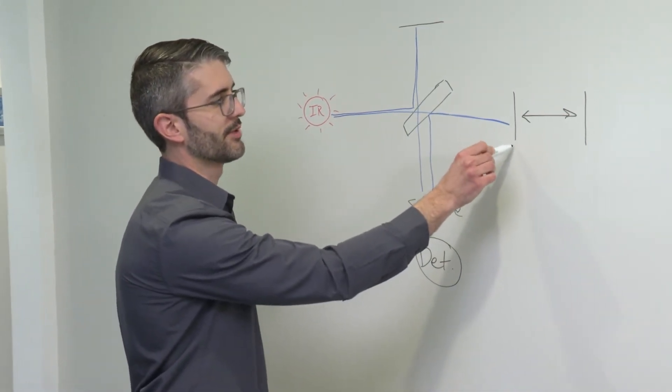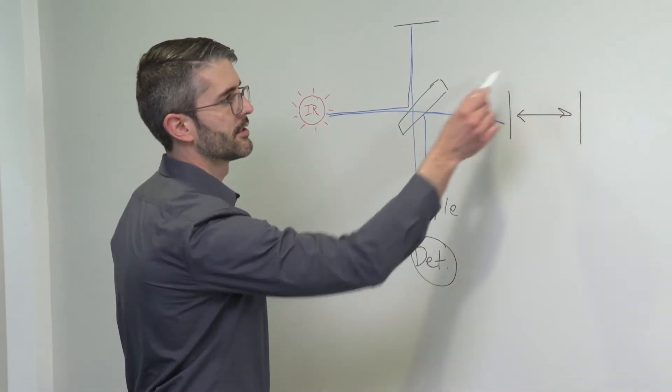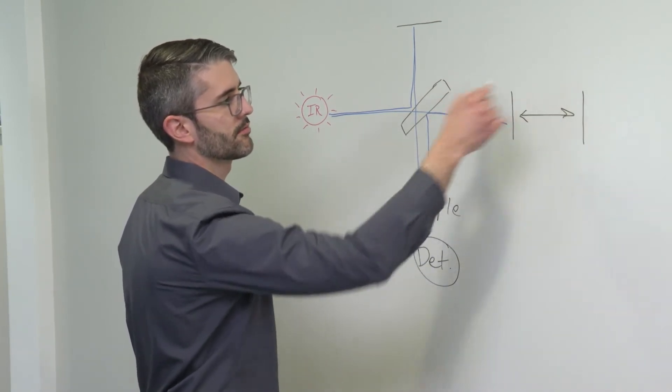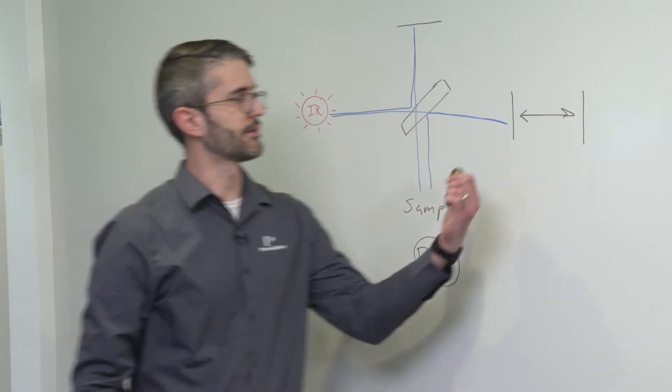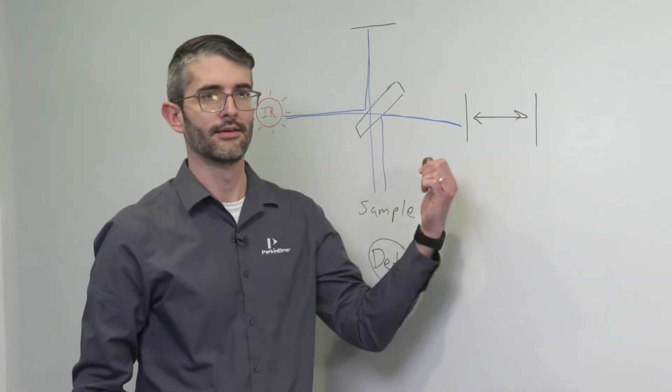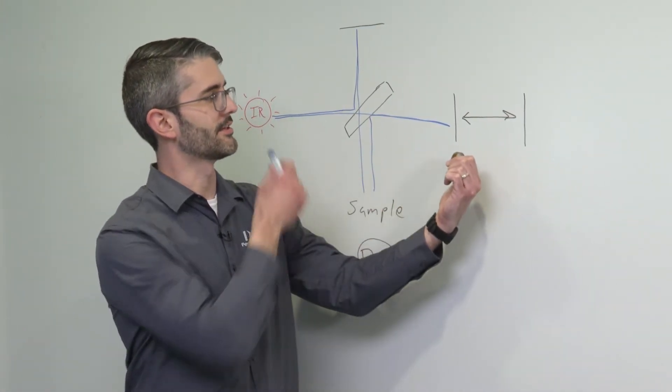Now in this design, the optical path difference must be changed to cause interference by this linear moving mirror. This moving mirror moves along a track, reflecting infrared light back.